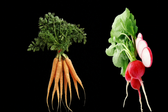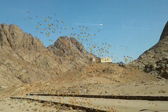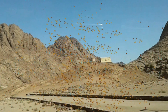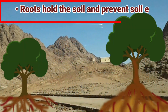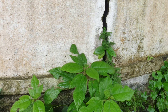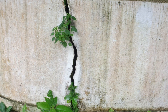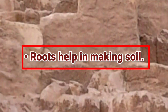Heavy rain and strong winds wash or blow away the topsoil. This is called soil erosion. Roots hold the soil and prevent soil erosion. Roots also help in making soil. How? Over several years, they split rocks into smaller pieces which later become soil.